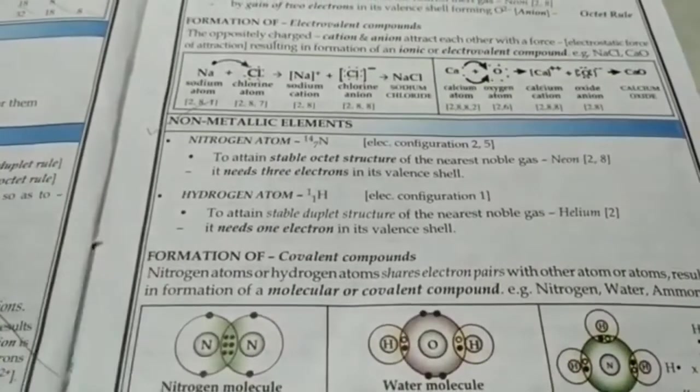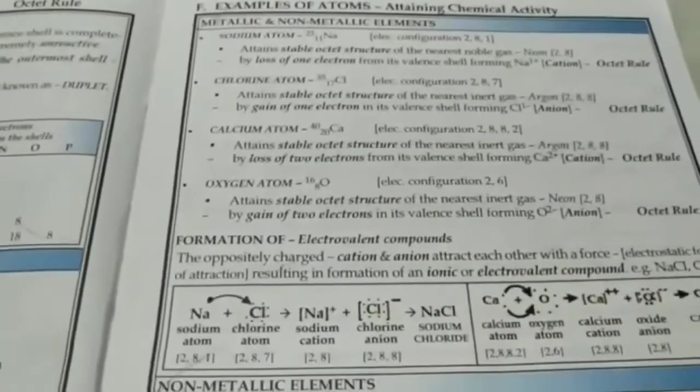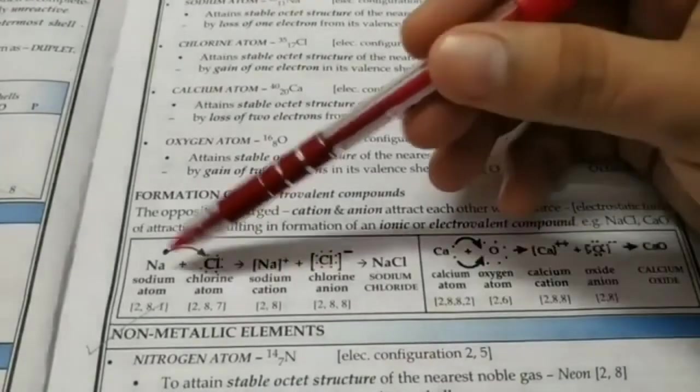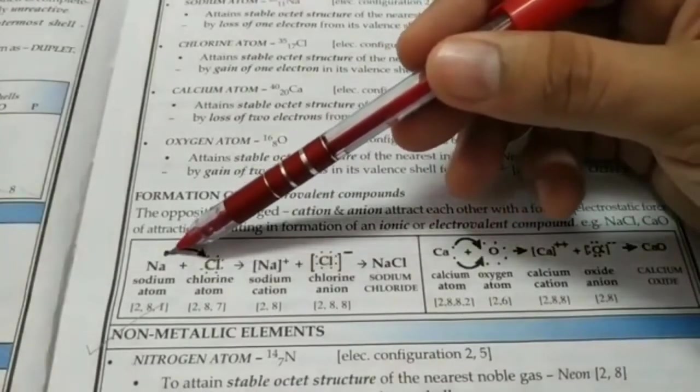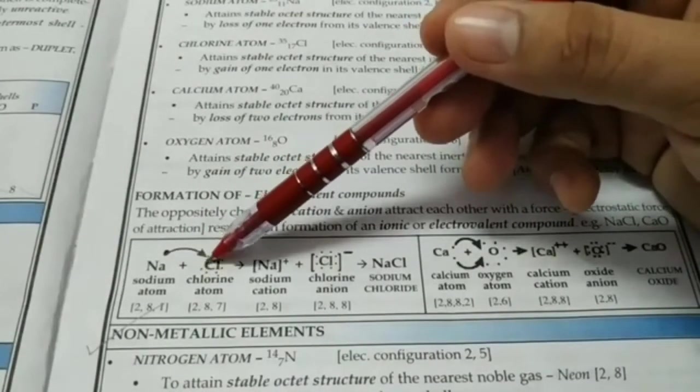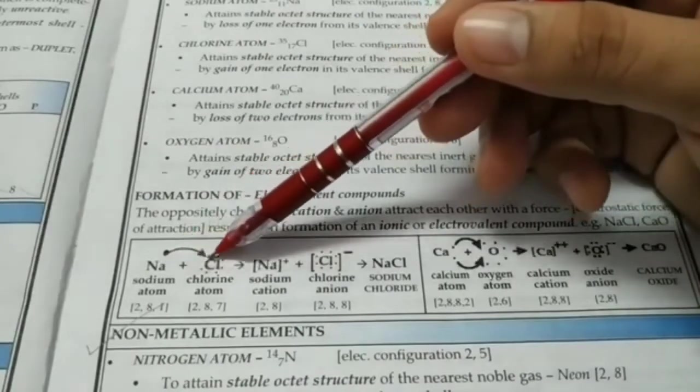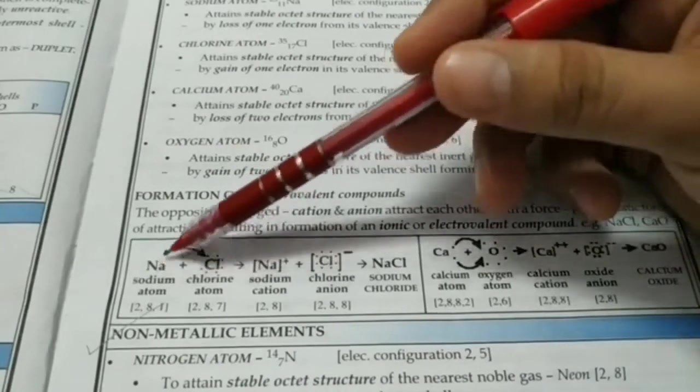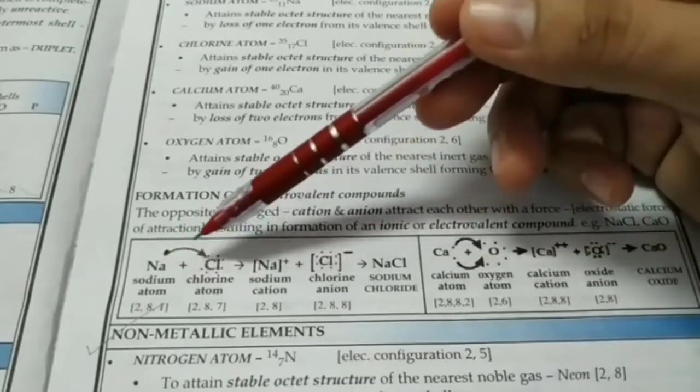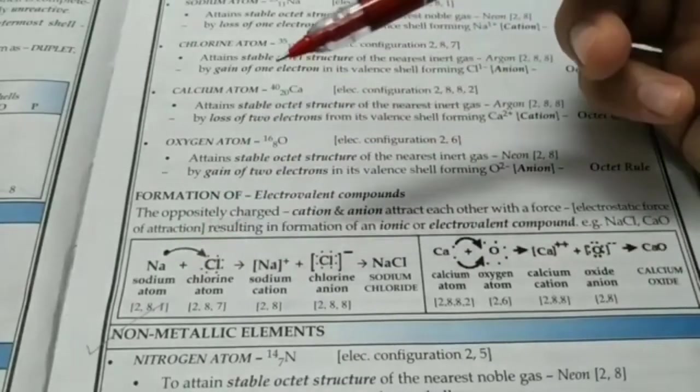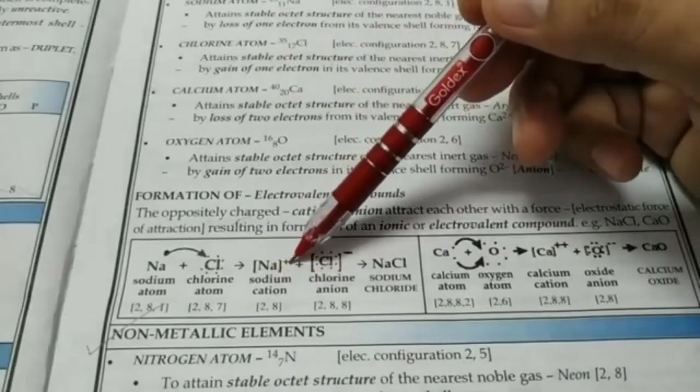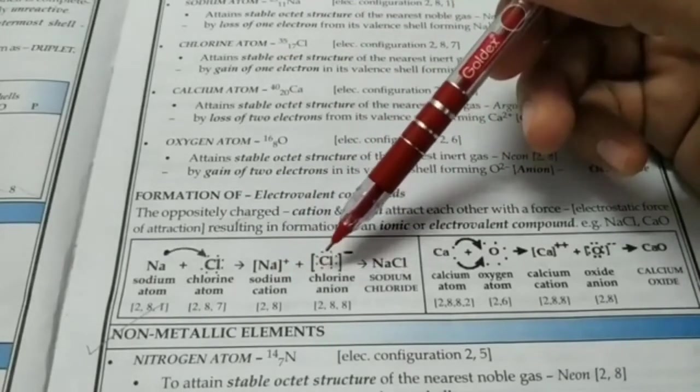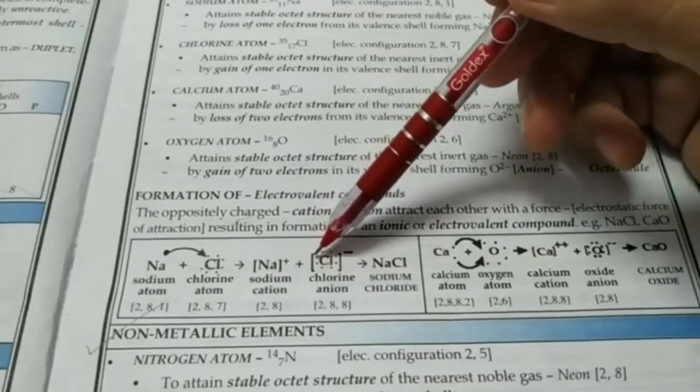Now let's understand how ionic compounds are created. Now look at sodium and chlorine. Sodium has one electron extra and chlorine has one deficient electron to become stable. Sodium will donate one electron. You see, metals always give electrons and giving of electrons is called oxidation, that is losing electrons and gaining electrons is called reduction.